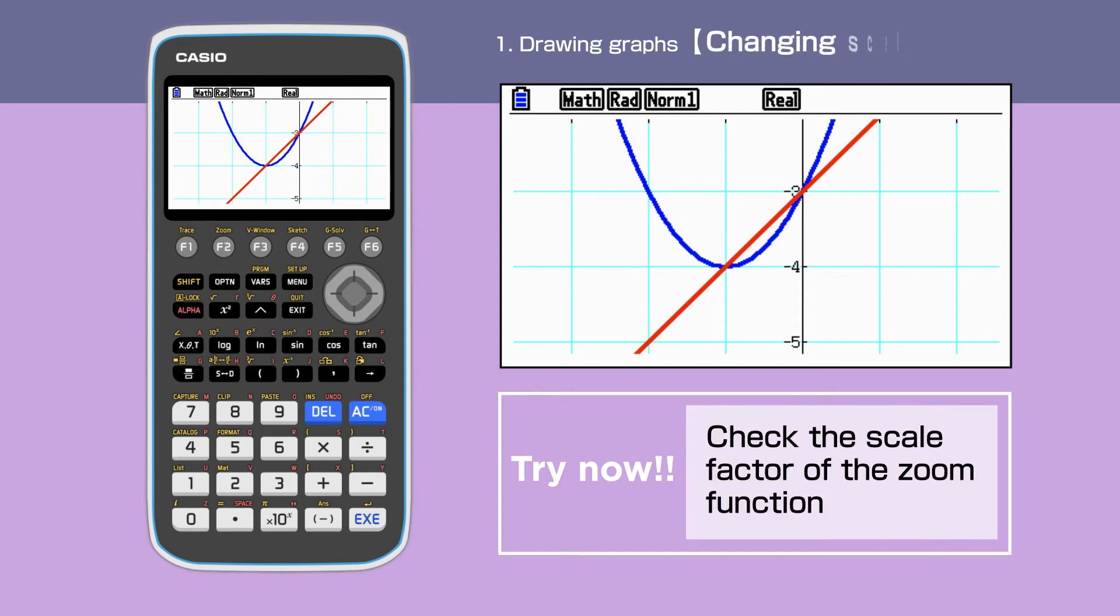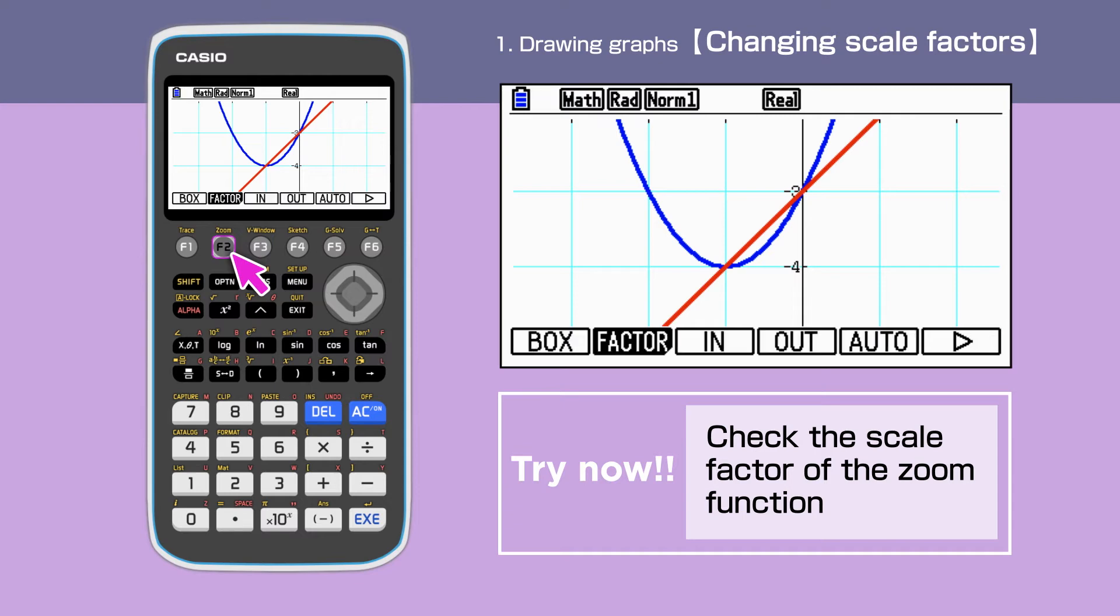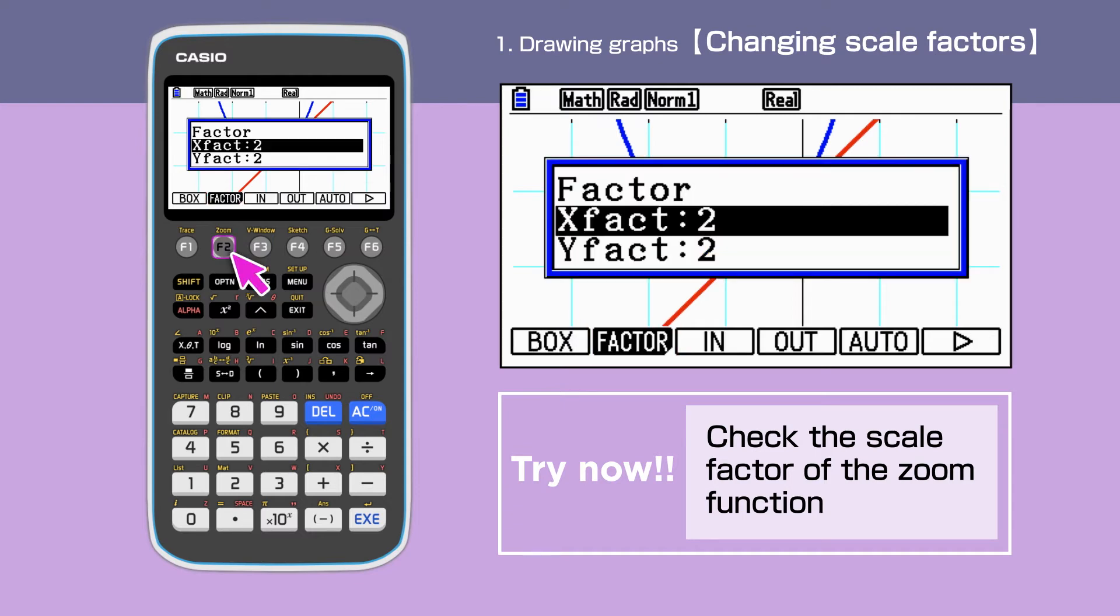The scale factor was 2 for this example. We can change scale factors by entering Shift, F2, F2, and enter scale factors of our choice. You can try a different scale factor yourself.